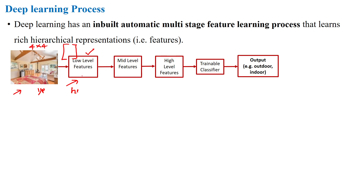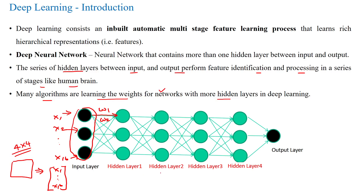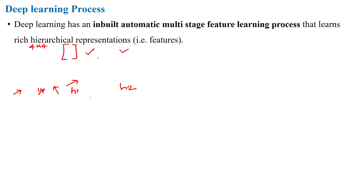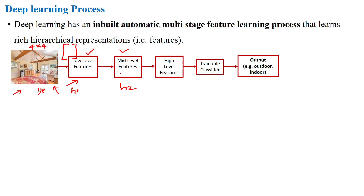Hidden layer 1 is learning low-level features from this image. All neurons are then connected to the next hidden layer 2, which learns the next level of features extracted from the previous layer — specifically medium-level features from the extracted low-level features. Hidden layer 2 learns a little more in-depth information of the given input image. This information is passed into the next hidden layer, and we can keep extending to any number of hidden layers n.